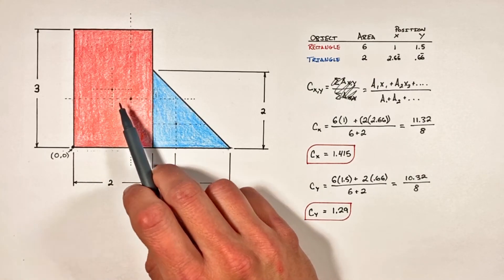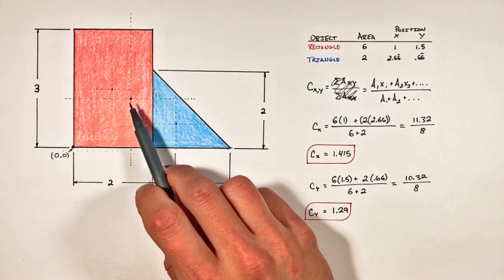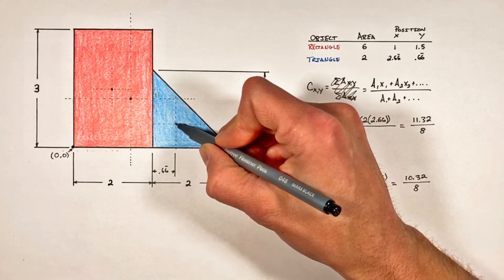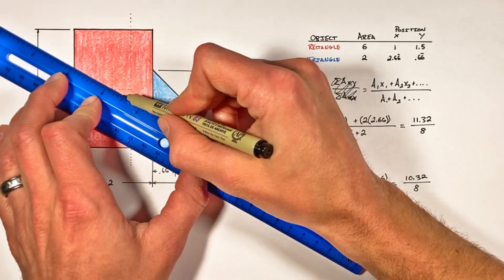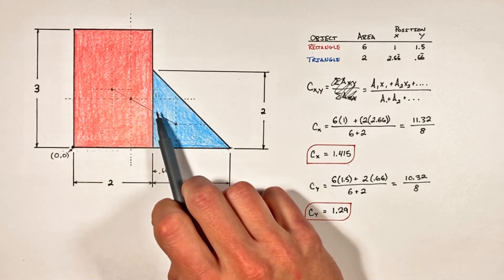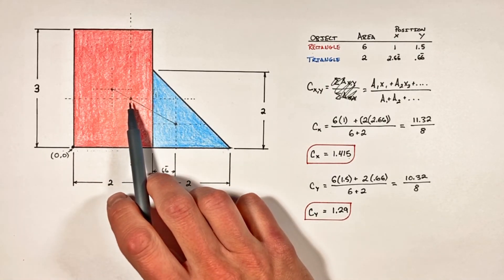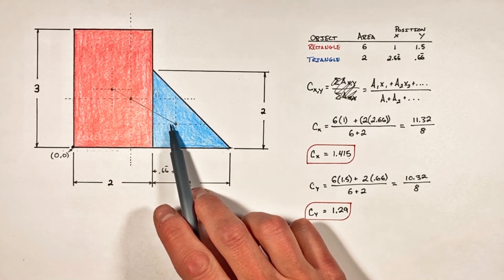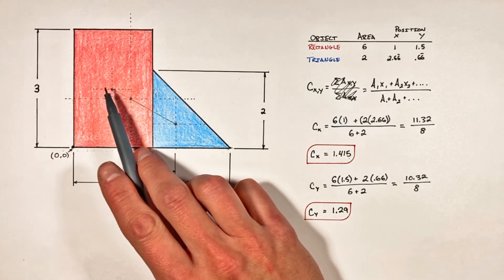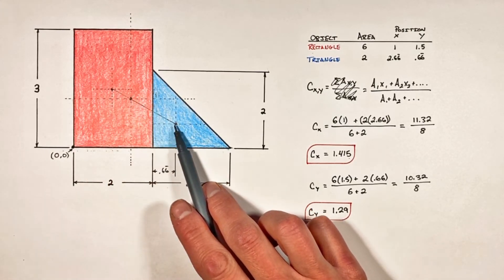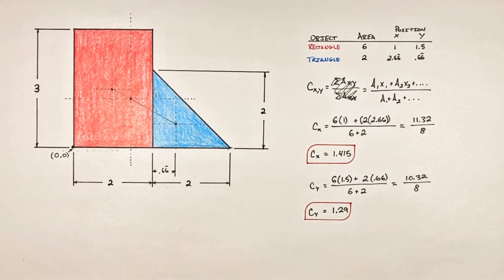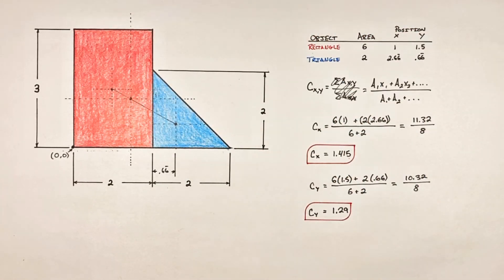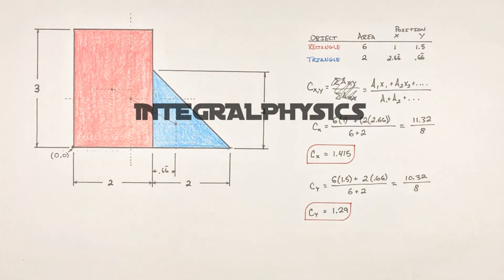There's one cool thing to point out about this center of area that might not be immediately obvious. If we draw a line from the center of area of the rectangle to the center of area of the triangle, the center of area of the entire assembly lies along that line. This confirms we've done the problem correctly — anytime we have only two objects, the total center of area lies on a line between those two individual centers. I hope you found this useful for solving center of area or center of mass problems for an assembly of objects.